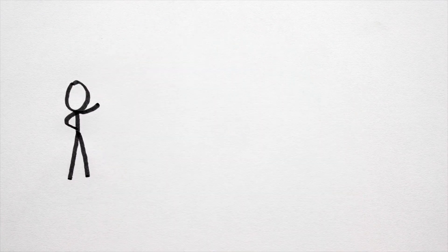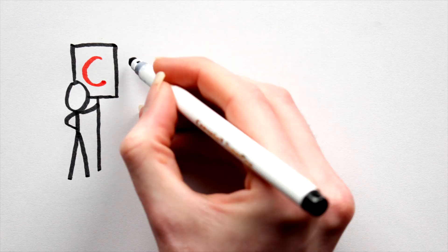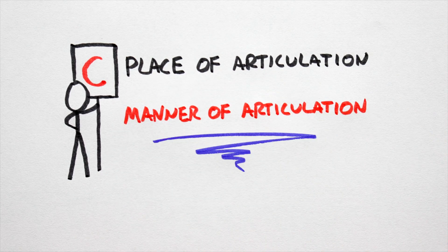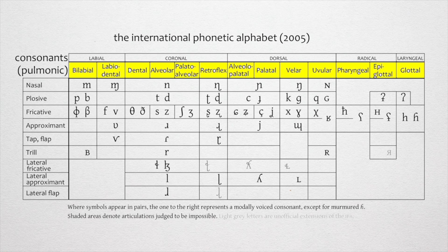In the last video, we looked at the first element that goes into forming consonants: place of articulation. In this video, let's look at manner of articulation. Place of articulation tells us where in the mouth the obstruction to the airflow is occurring. Manner of articulation, listed on the site here, will tell us how much of the airflow is being obstructed. It's a roughly top-down kind of thing, with total obstruction near the top and minimal obstruction near the bottom.